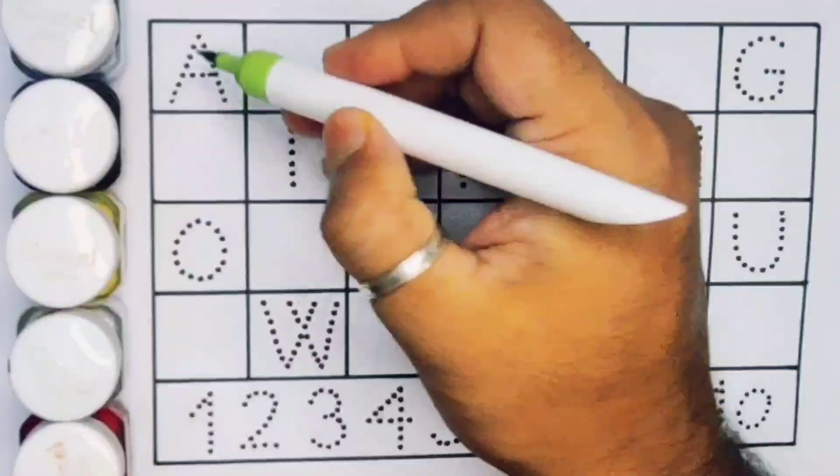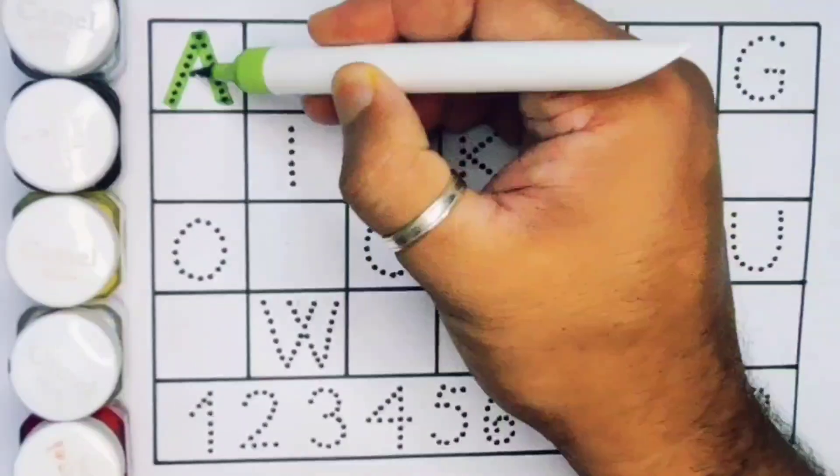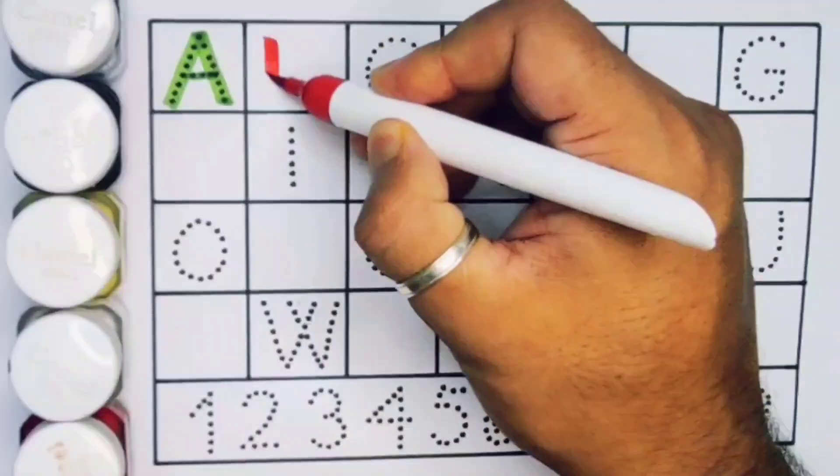First A, A for aeroplane. Next kids B, B for bat.